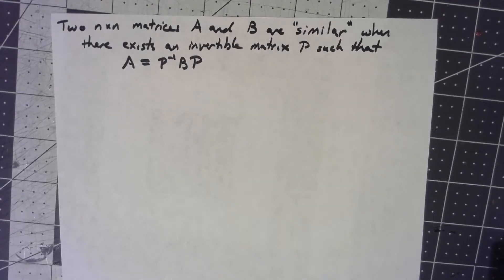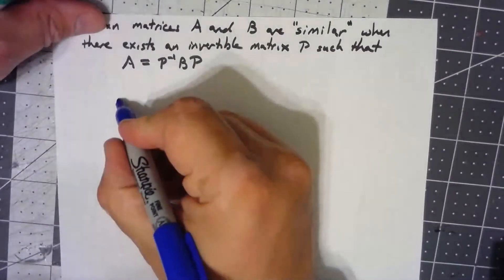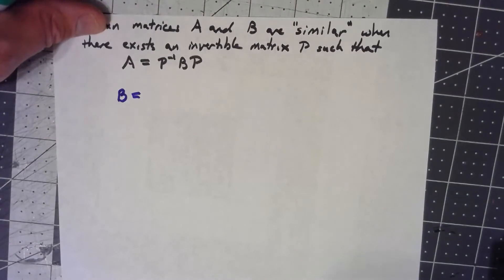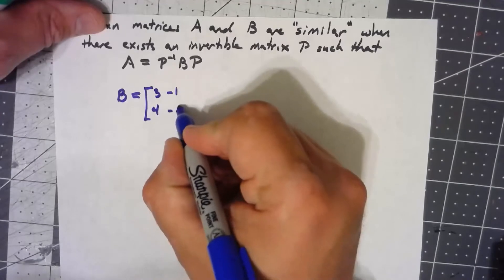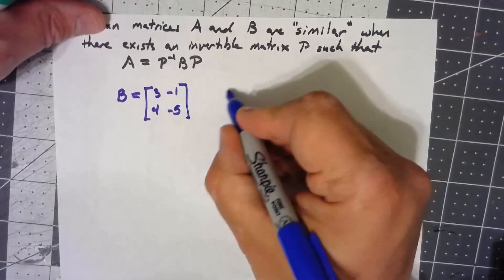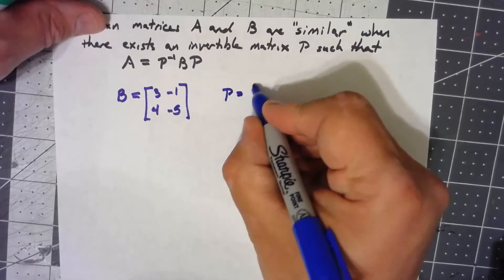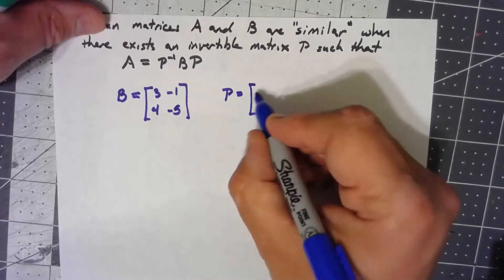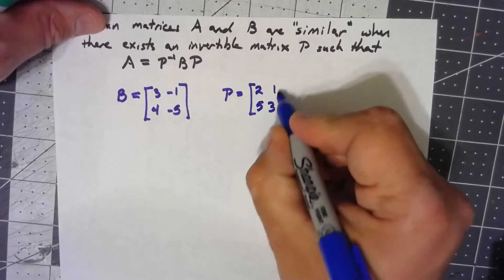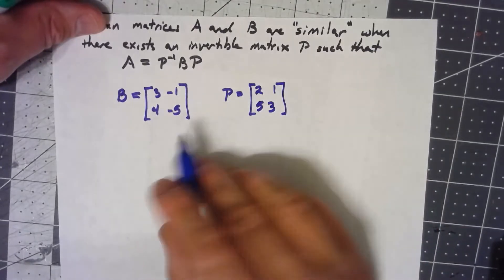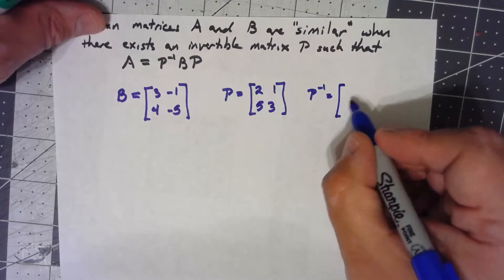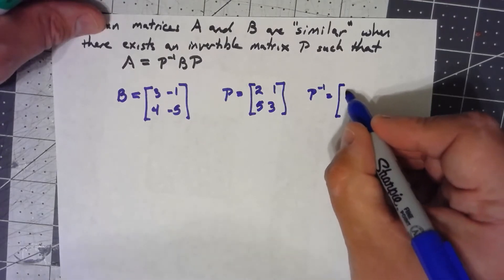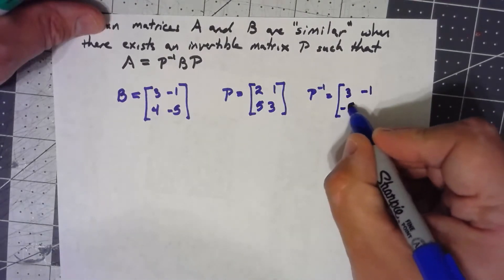Let's take a look at an example. Let's say my matrix B is [3, -1; 4, -5]. Now I can take a matrix P equal to [2, 1; 5, 3]. I set this up so that it has a nice whole-number inverse, which would be [3, -1; -5, 2].